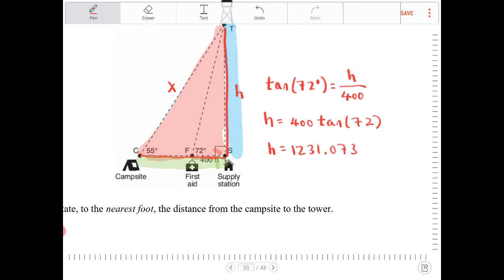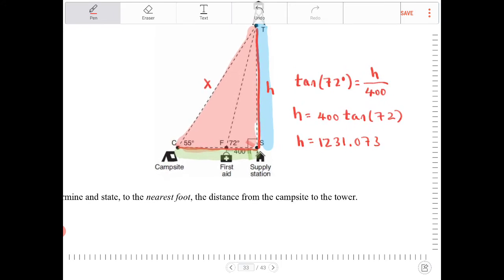So H is equal to 1231.073. I'm going to round at the very end because it says for us to round to the nearest foot. I'm going to do that at the end there. So H is this value that I just found. And since I know H, I can then solve for X because now I'm going to focus my attention on the big right triangle.